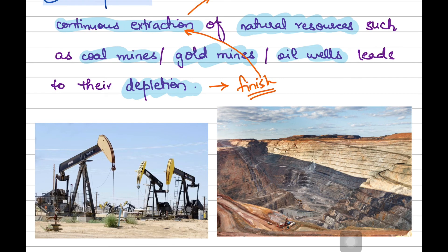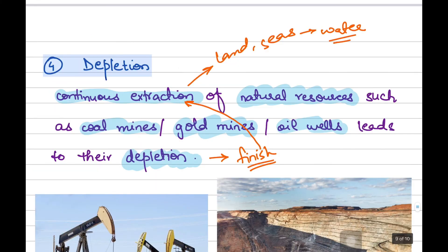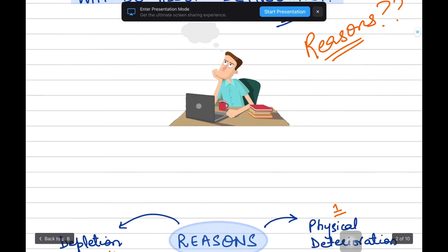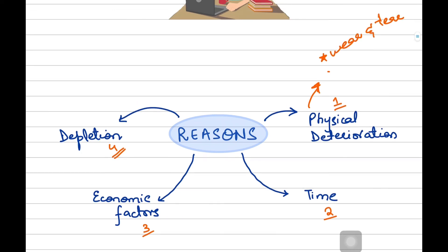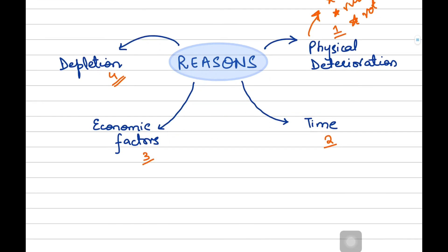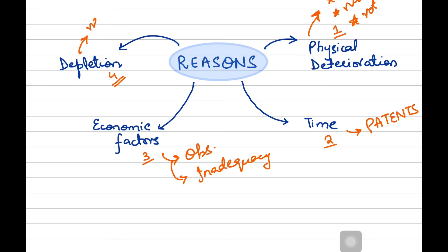What can come under such natural resources? Your gold mines, your coal mines, your oil wells, and so on. This is all about the reasons because of which your assets will depreciate. Let us revise it quickly: in physical deterioration we covered wear and tear of machinery and equipment, erosion, rusting, and wooden furniture getting rotten. In time, we covered patents. In economic factors, we covered obsolescence and the inadequacy of non-current assets. And lastly, in depletion, we covered natural resources.